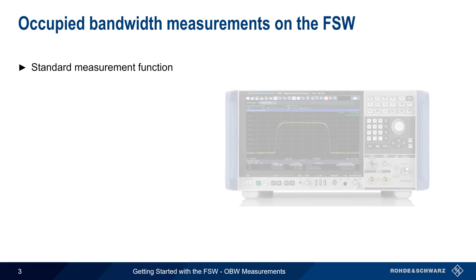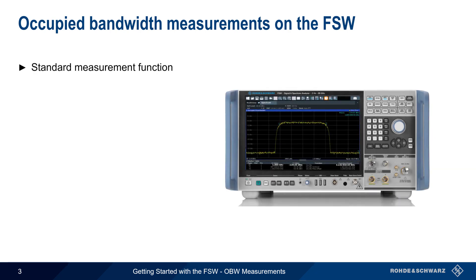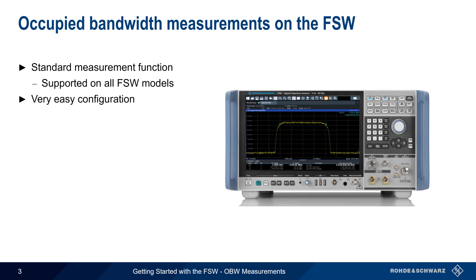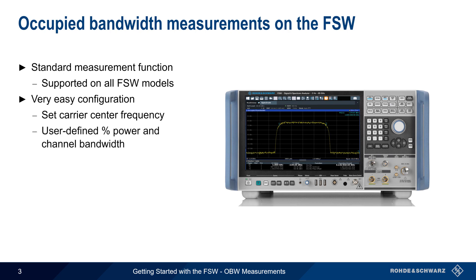Occupied bandwidth is one of the standard spectrum measurements on the FSW, and is supported on all FSW Series Analyzers. The measurement itself is very easy to configure. The user merely has to configure the center frequency of the signal, and specify the percent power bandwidth and channel bandwidth.